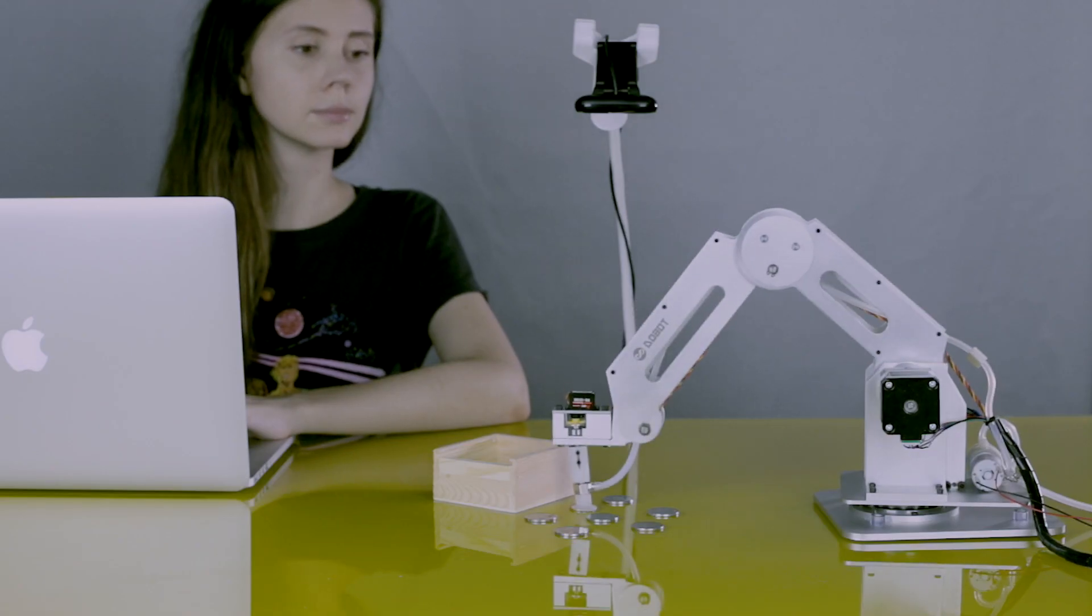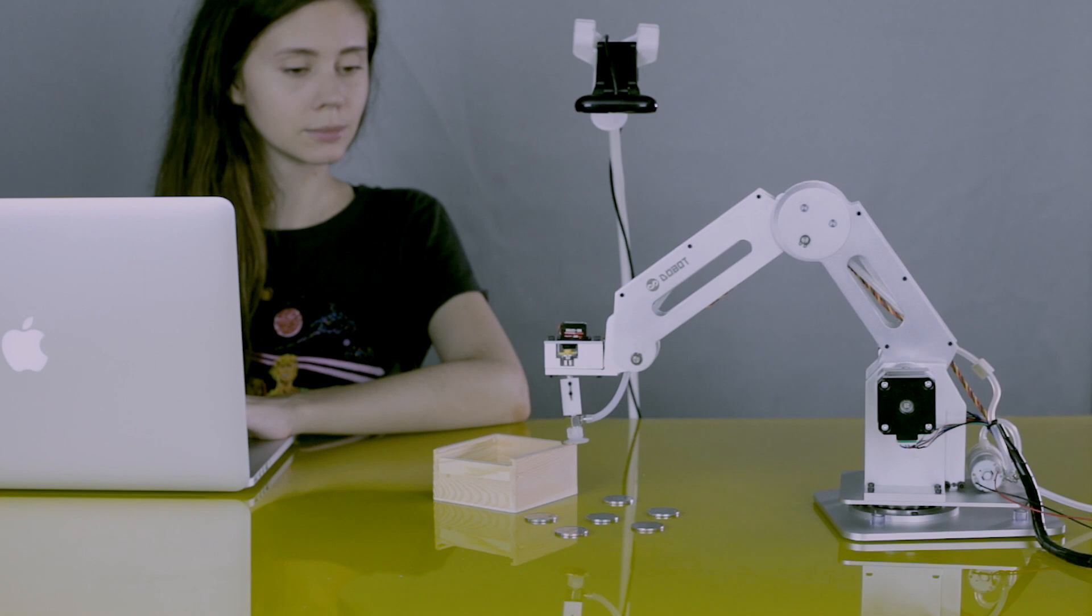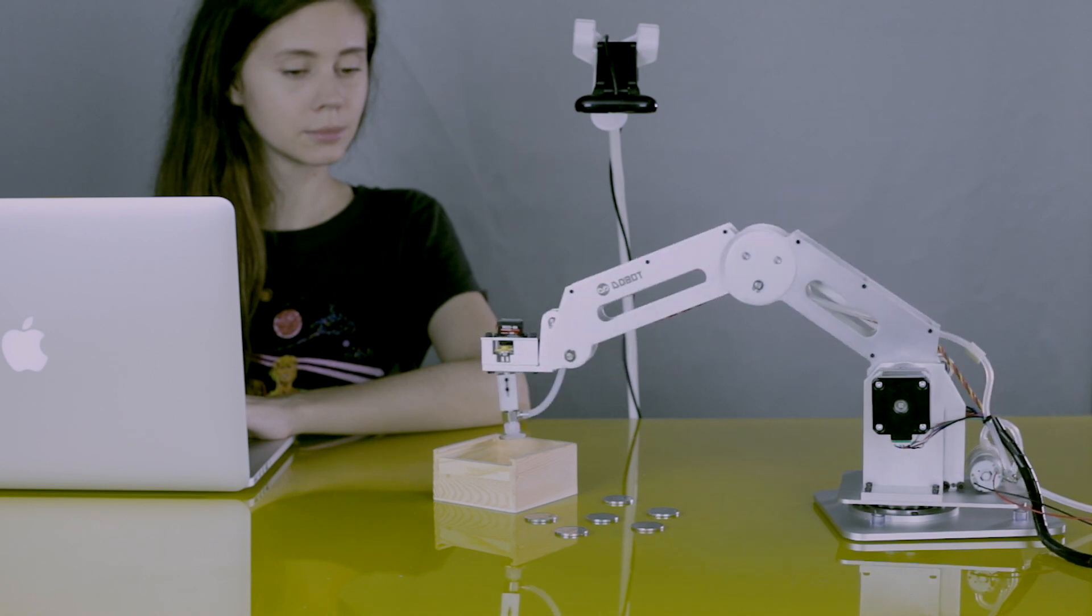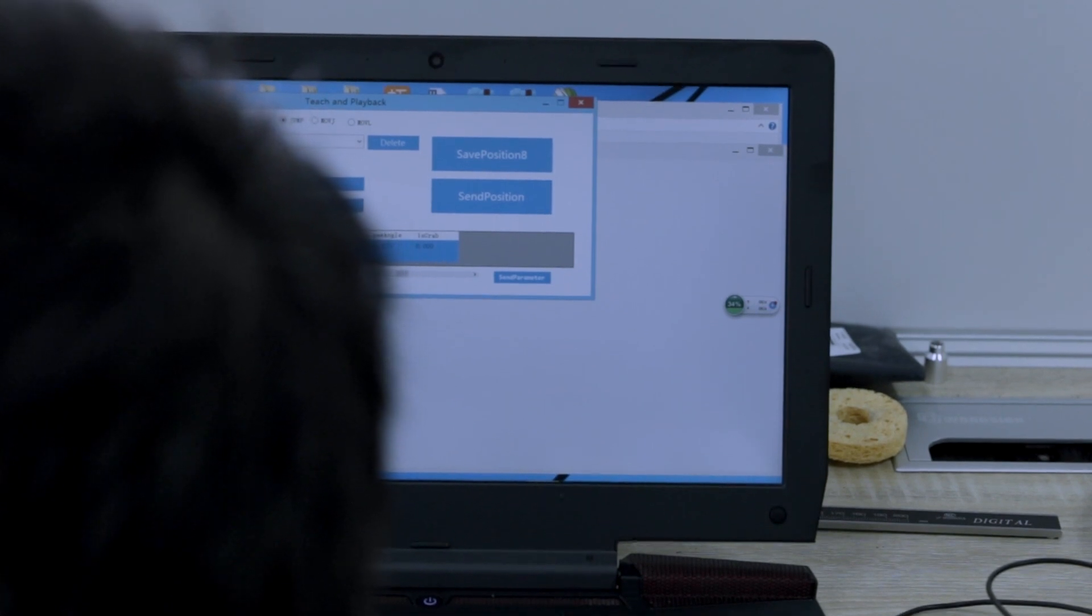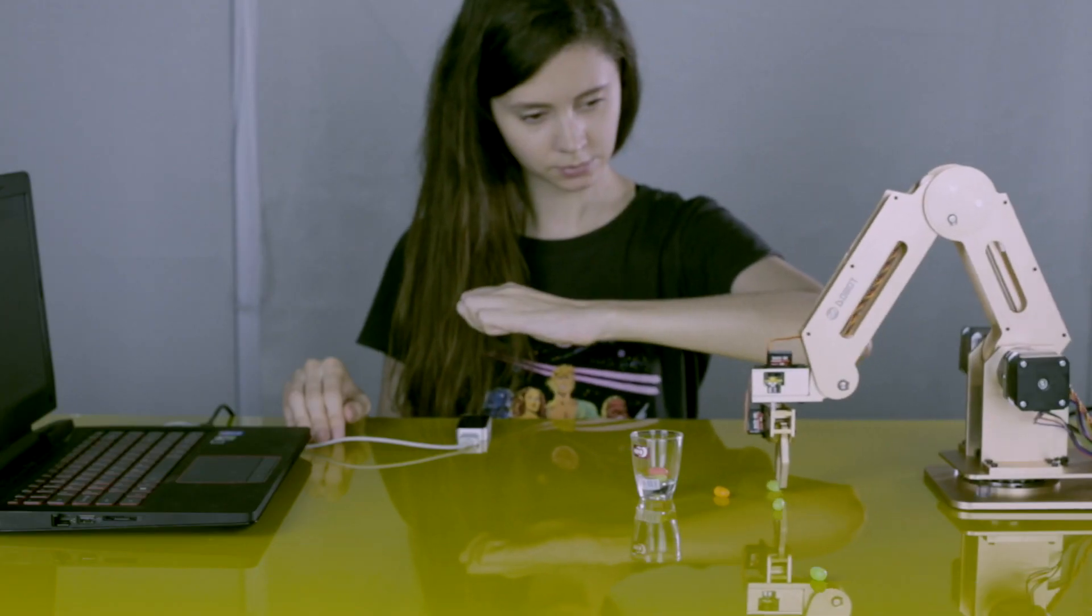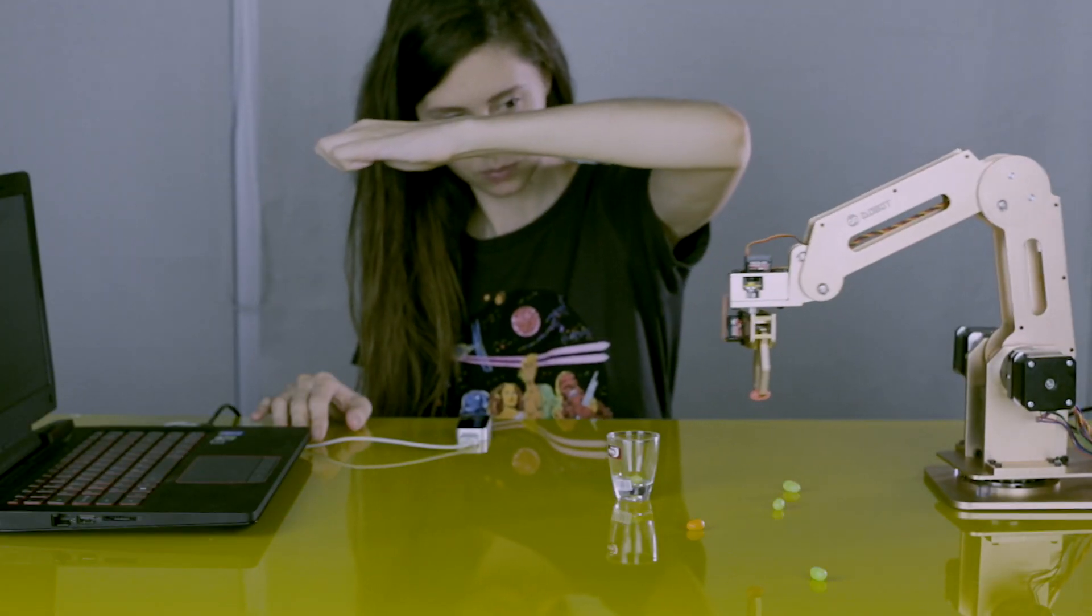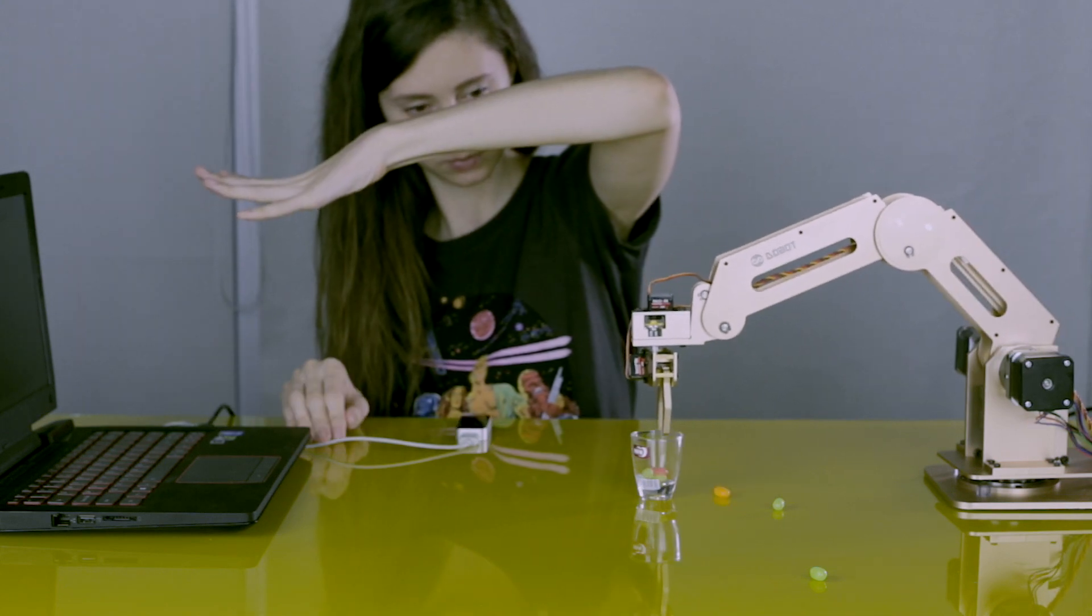DoBot is able to recognize shapes and colors with a portable web camera. But it doesn't end there. You can download and share new codes for different kinds of item recognition. You can also control it using the Leap Motion that can register your hand movement as you hover your hand over the sensor.